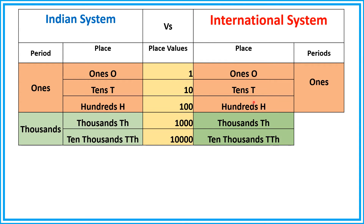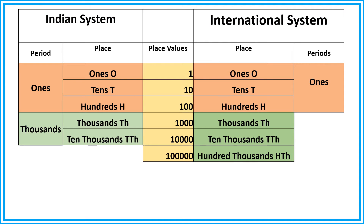Next comes thousands. In the Indian system, we have thousands and ten thousands — that is the thousands period. In the international system, we have thousands, ten thousands, and hundred thousands, which forms the thousands period. So in the Indian system, we have only thousands and ten thousands, whereas in the international system, we have thousands, ten thousands, and hundred thousands.